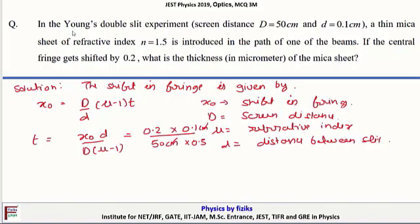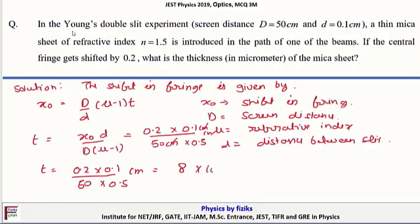The centimeters cancel out. So t = (0.2 × 0.1) / (50 × 0.5) cm = 8 × 10⁻⁴ cm = 8 micrometers. Our answer for this problem is 8 micrometers.